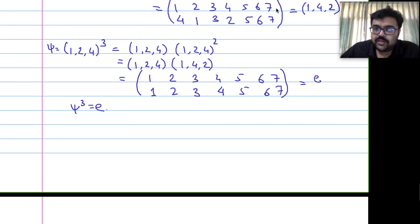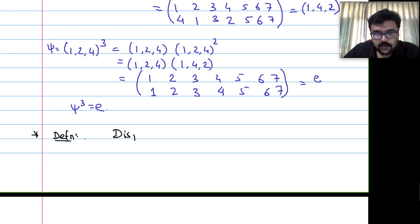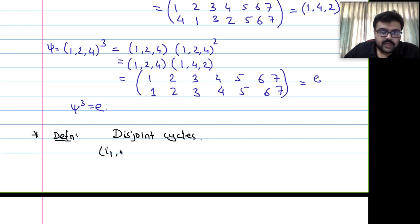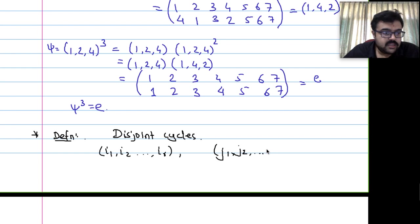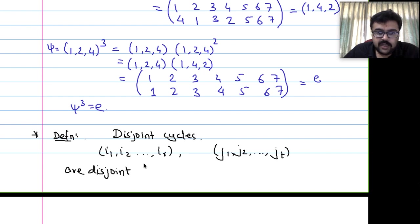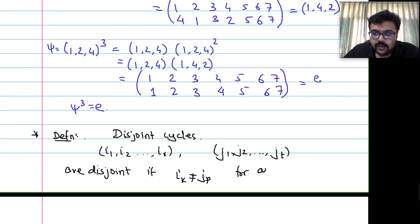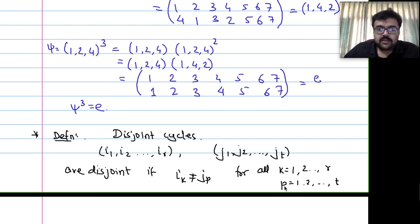Definition of disjoint cycles: Two cycles (i1, i2, ..., ir) and (j1, j2, ..., jt) are called disjoint if none of the i_k equals any j_p, for all k = 1,...,r and p = 1,...,t. In other words, they share no common element. This was seen in our example: (1,2,4) and (3,6,5) are disjoint.